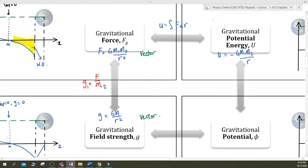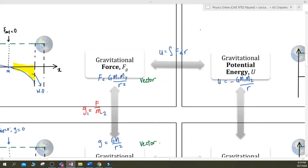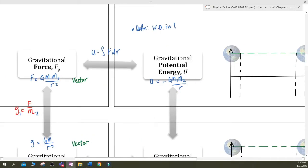Now sometimes they will use U to represent potential energy. Sometimes they use Ep. Follow the question. But you should know the definition. So the definition for this is work done in bringing an object or a mass from infinity to a point in a gravitational field.